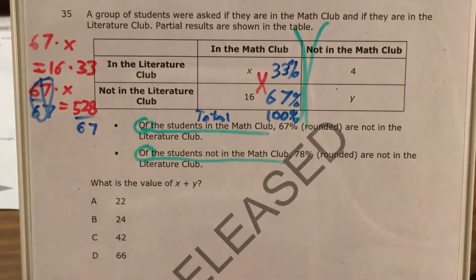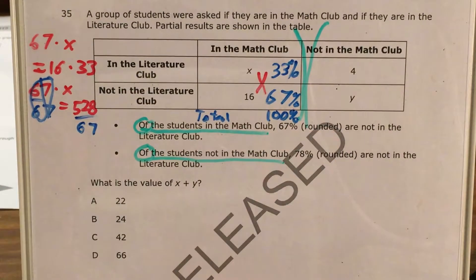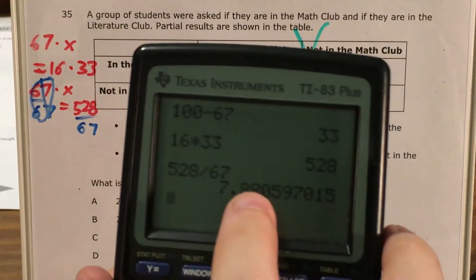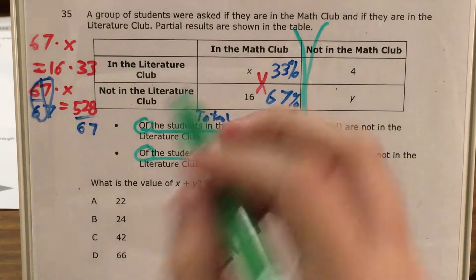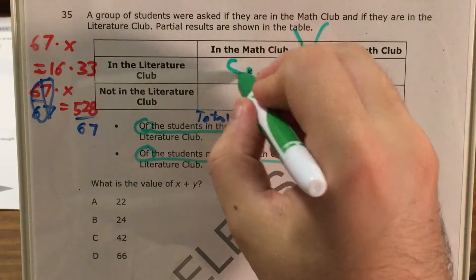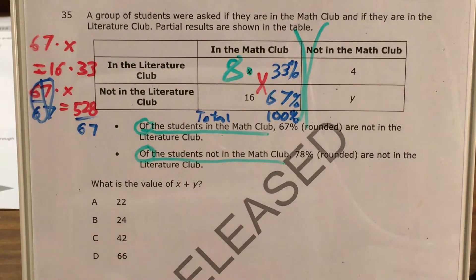Now this is really close to 8. And since this original 67% was rounded, and we can't have 0.88 hundredths of a person, I'm going to just go ahead and say that this is 8 people. So I know that x equals 8.